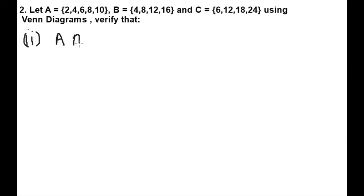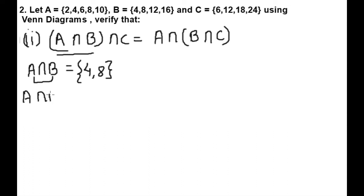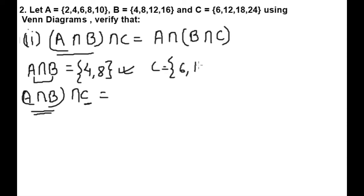The second verification is (A∩B)∩C equals A∩(B∩C). First we find A∩B, which means the common elements between A and B. We can see the common elements are 4 and 8. Now (A∩B)∩C means we find common elements between {4,8} and C = {6,12,18,24}. There are no common elements, so (A∩B)∩C is the null set.